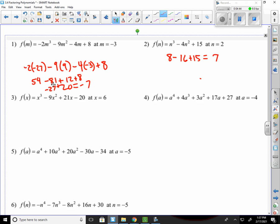Number 4. Do negative 4 to the 4th. That's 256. And then it would be minus 256. This 4 to the 3rd is 64 times 4. So that would be negative 64 times 4, which would be 256. So it's 256 minus 256. Those cancel out. 3 times 16. That's 48. And then 17 times 4 times negative 4 is negative 68. So negative 68 plus 48. That is negative 20. Plus 27 is 7.